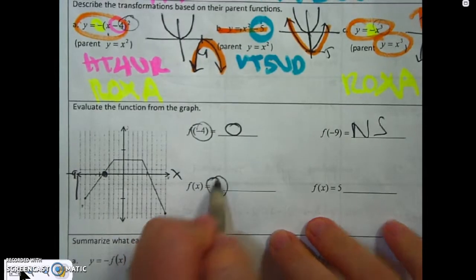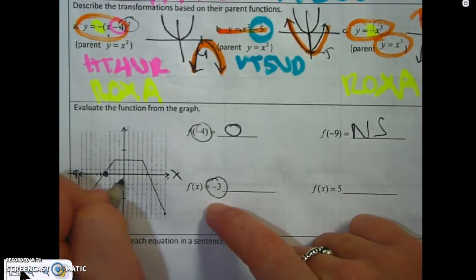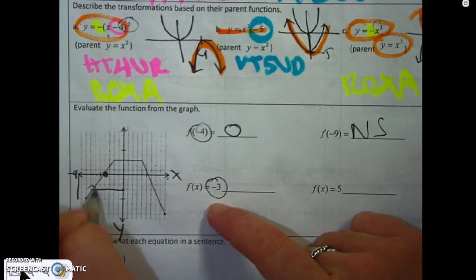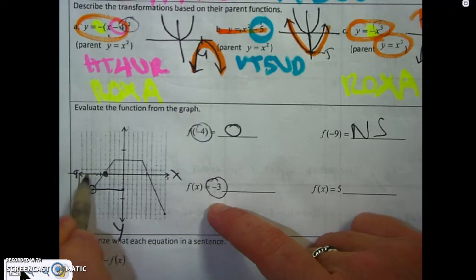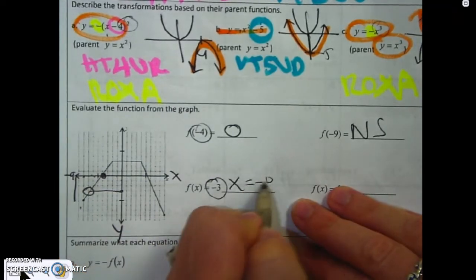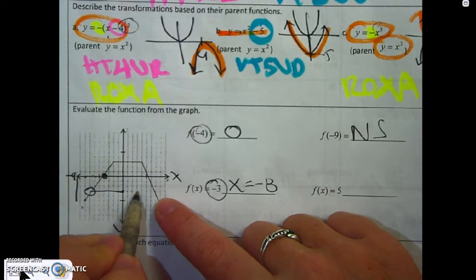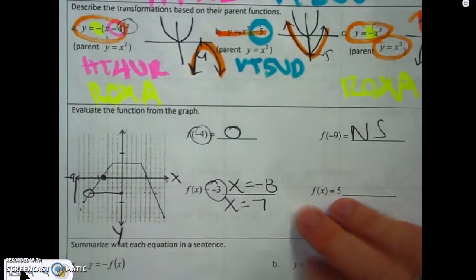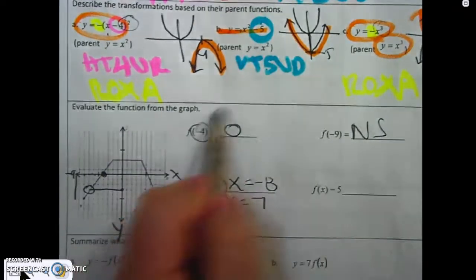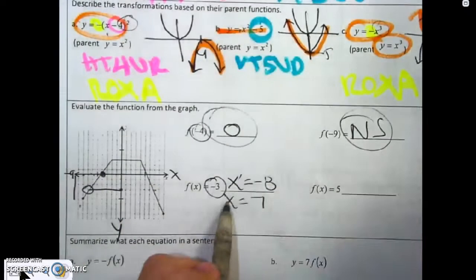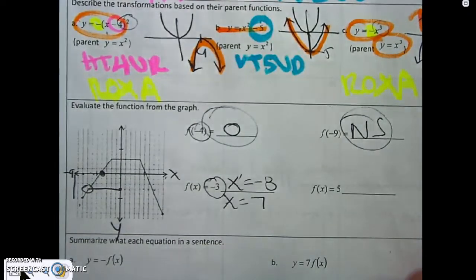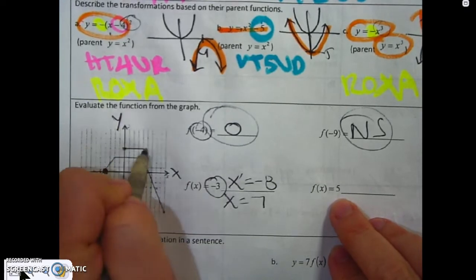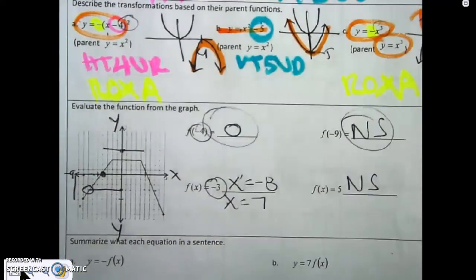This time, go along the y-axis to 3. You can go to the left and get a value that looks like negative 8, so x equals negative 8. But you can also go to the right and get x equals 7. So there are two answers for that one — each worth a point. Going to y equals 5, there's nothing to the right and nothing to the left, so that's another no solution.